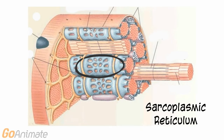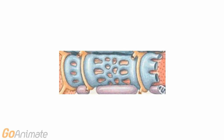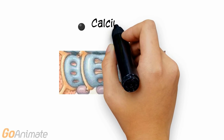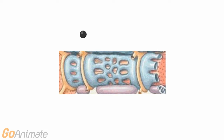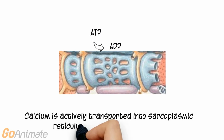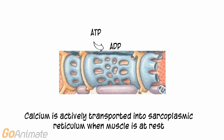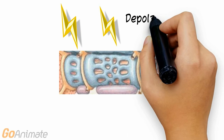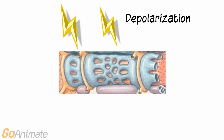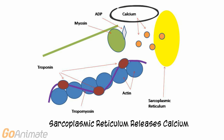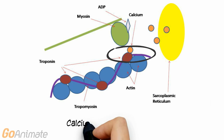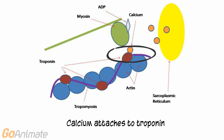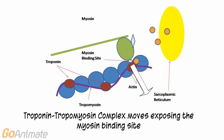We need to introduce another important structure — a network of membranous channels that wraps around the muscle fibers called the sarcoplasmic reticulum. When the muscle is at rest, calcium is actively transported into the sarcoplasmic reticulum. Remember that active transport uses ATP. This creates a large calcium gradient. When the muscle depolarizes, the sarcoplasmic reticulum releases calcium. The calcium binds to the troponin portion of the troponin-tropomyosin complex, and the complex moves, exposing the myosin binding site on the actin.